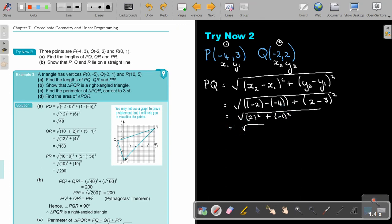Which is going to be 4 plus 1, which is going to be the square root of 5. And just leave it like that.